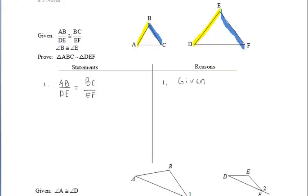And also, they give us angle B is congruent to angle E. So that's the included angle. So those included angles are congruent as well. Which means that's enough to say that those two triangles are similar by side angle, side similarity.